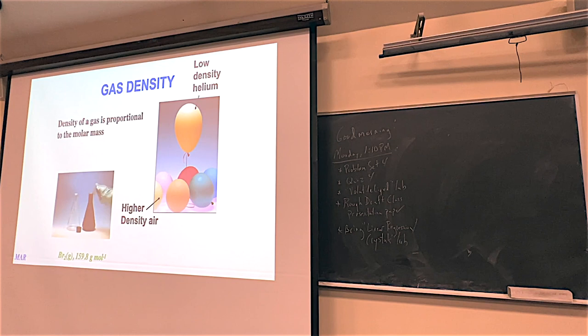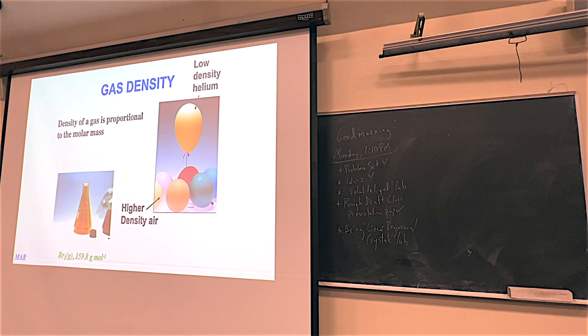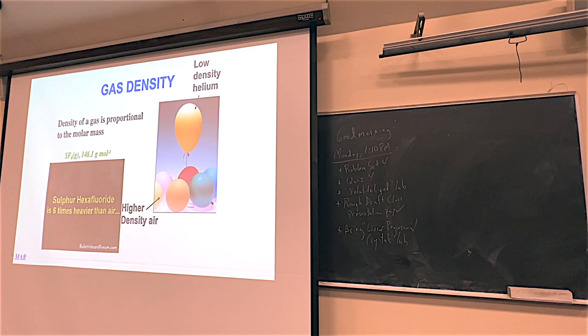Bromine vapor is roughly five times more dense than air — it can actually be poured from one flask to another. The density of bromine, like that of all gases, is directly proportional to the molecular mass of its molecules in the gas phase.